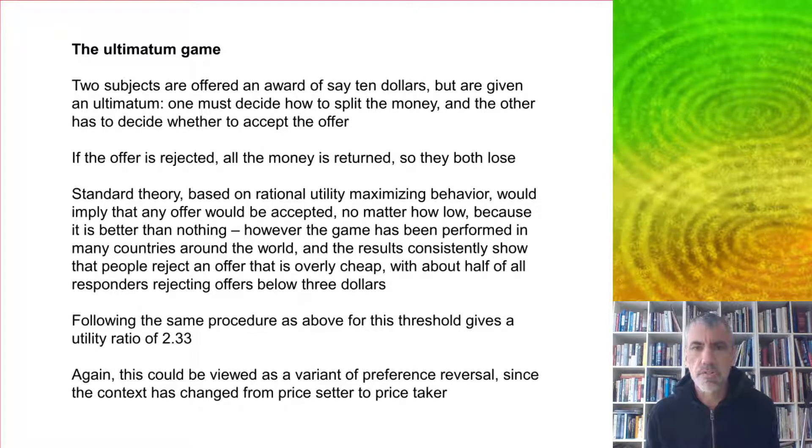Following the same procedure for this threshold gives a utility ratio of 2.33. Again, this can be viewed as a variant of preference reversal since the context has changed from price setter to price taker.